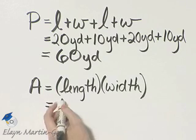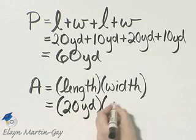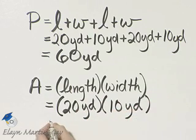So let's find length, given to be 20 yards, times width, given to be 10 yards, and then let's find that product.